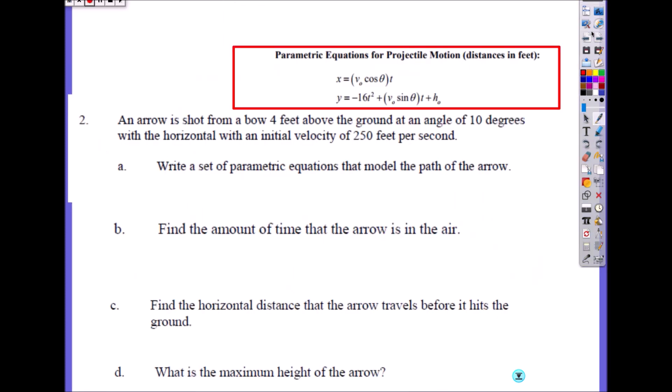Number two: An arrow is shot from four feet above the ground at an angle of 10 degrees. This is the initial height, this is the angle, and the initial velocity was 250 feet per second. So x equals 250 cosine of 10 degrees times t. Y equals negative 16t² plus 250 sine of 10 degrees times t plus the initial height, which is 4.